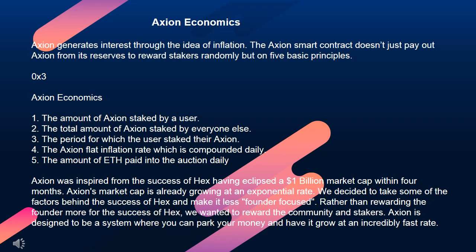Axion generates interest through the idea of inflation. The Axion smart contract doesn't just pay out Axion from its reserves to reward stakers randomly, but on 5 basic principles.